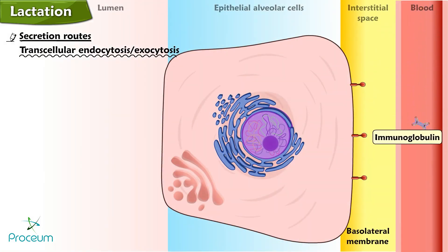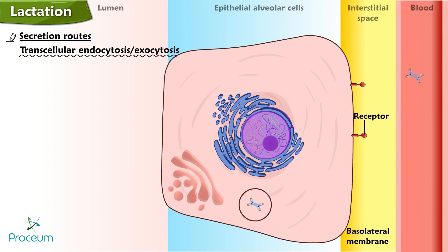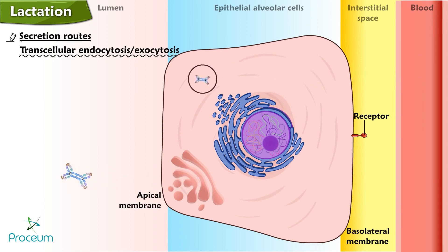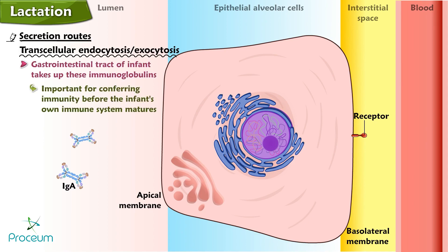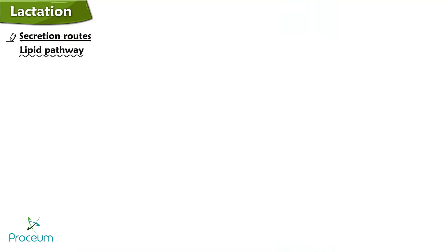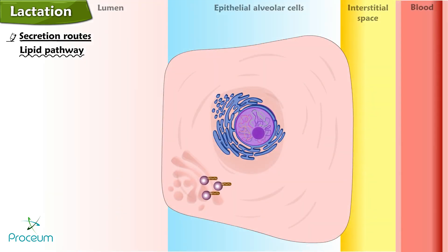Exocytosis discharges the contents of the vesicle into the lumen of the alveolus. In the transcellular endocytosis-exocytosis pathway, the basolateral membrane takes up maternal immunoglobulins by receptor-mediated endocytosis. Following transcellular transport of these vesicles to the apical membrane, the cell secretes these immunoglobulins, primarily IgA, by exocytosis. The infant's gastrointestinal tract takes up these immunoglobulins, which are important for conferring immunity before the infant's own immune system matures.